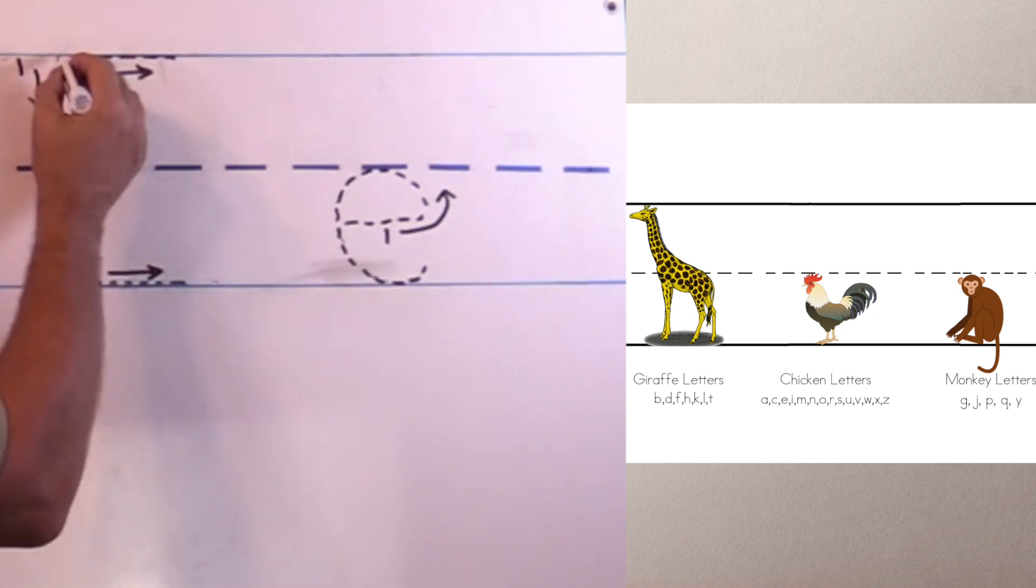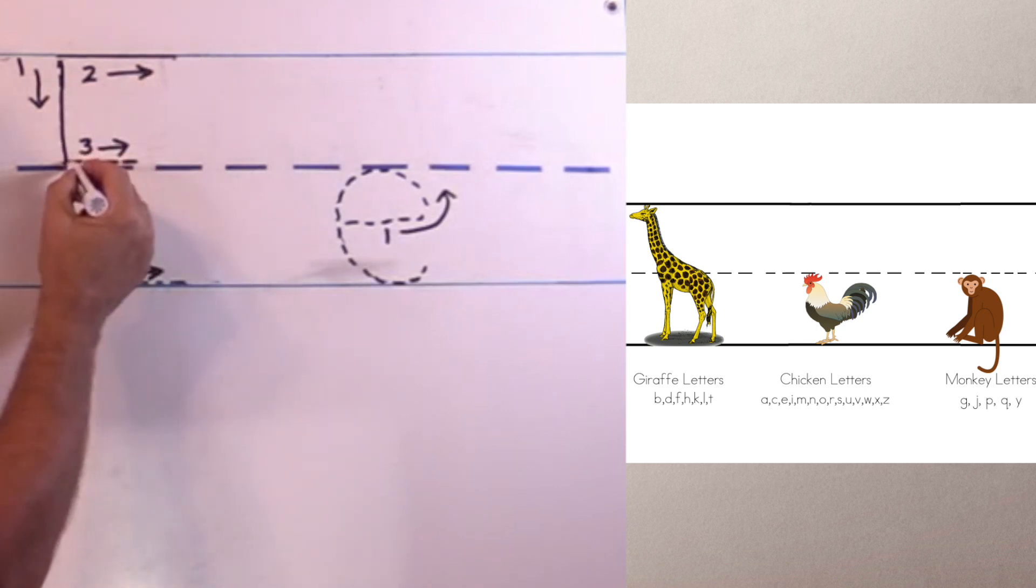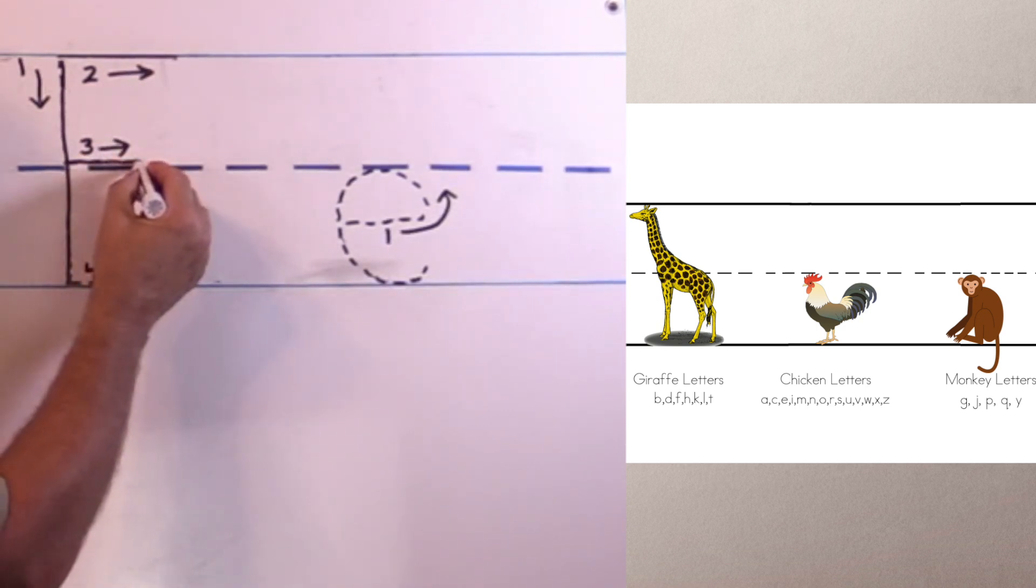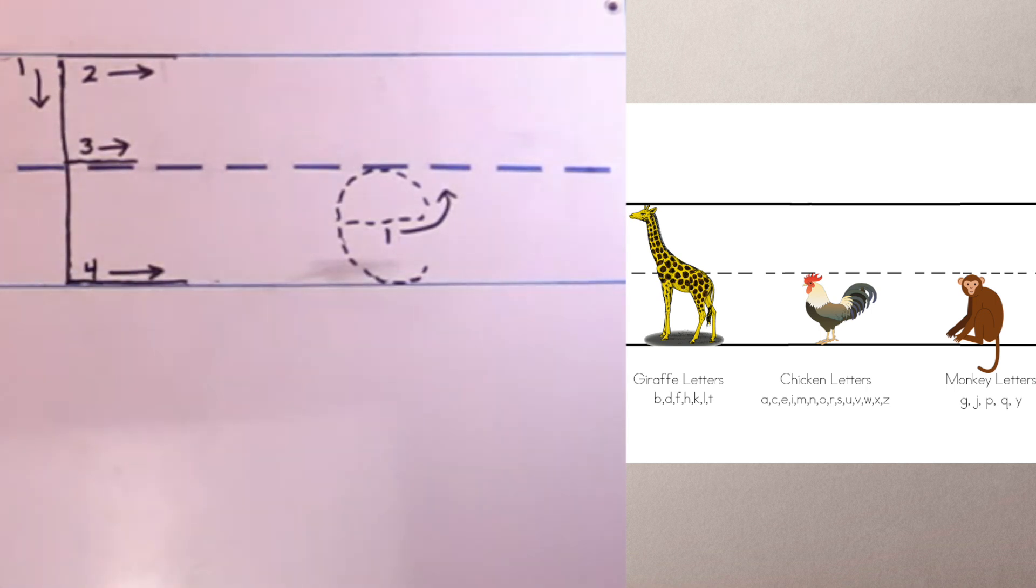I go back to the top and I go straight across, and then I go to the middle and I go straight across but it's a shorter line, and then at the bottom I go straight across and I make it as long as the top line. And there is our uppercase E.